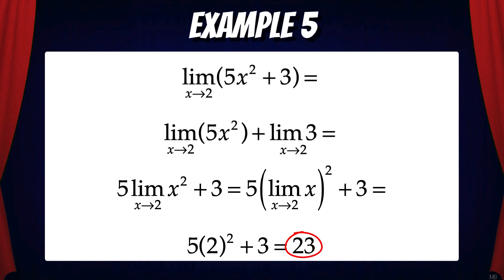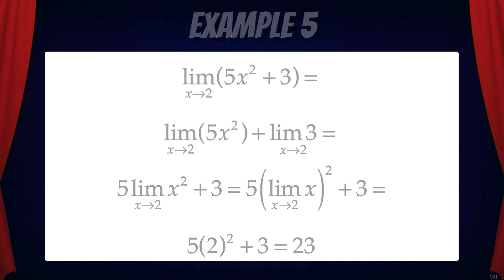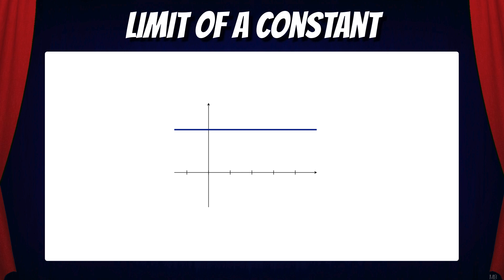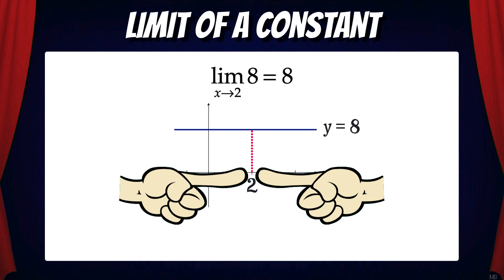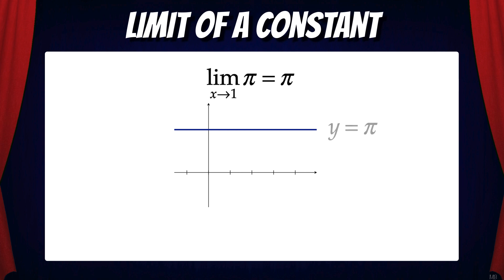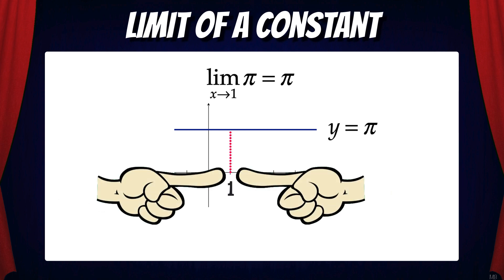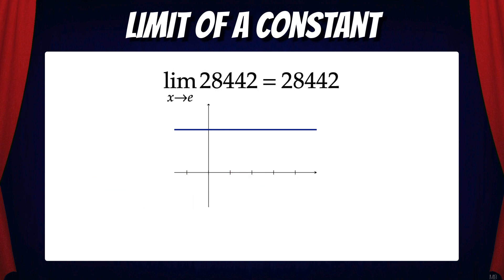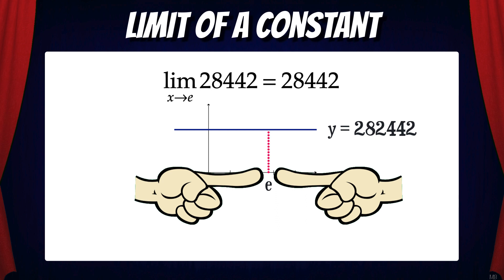Now, you might be saying this seems like a lot of work to evaluate a simple limit problem. Once you understand the limit laws, you don't necessarily need to go through the process of separating limits into their components in every problem. But as we dive deeper into calculus, it's important that we understand how limit laws work. Before we end this video, let's take a quick look at the limit of a constant. Suppose we have the limit of 8 as x approaches 2 — the line y equals 8 is just a horizontal line. As x approaches 2, the height of the function is always 8, so the limit is just 8. This works for any constant: the limit of pi as x approaches 1 is pi, and the limit of 28,442 as x approaches e is 28,442. The limit of a constant is the constant.